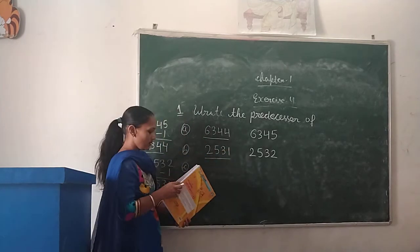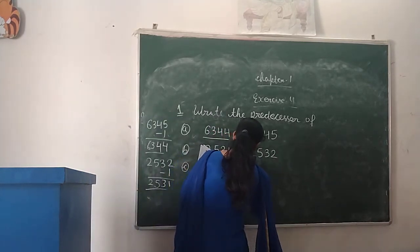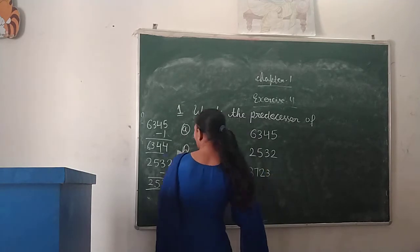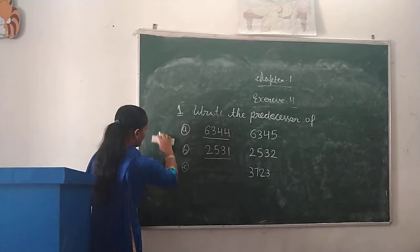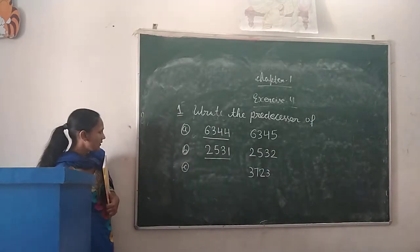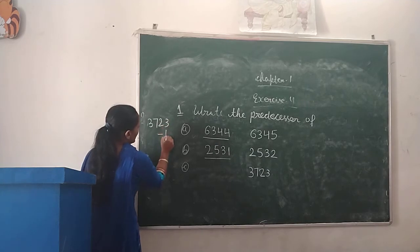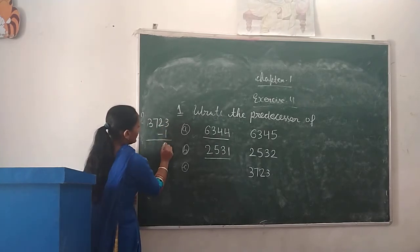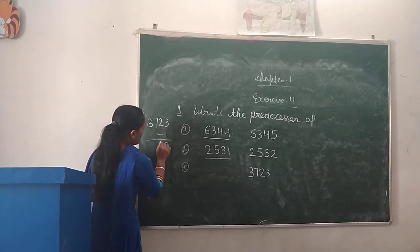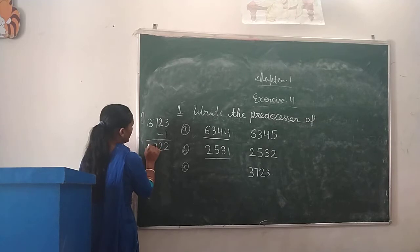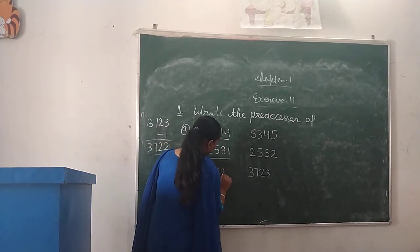Next, Part C: 3,723. We will subtract 1. 3 minus 1 is 2. 3 minus 0 is 3. 7 minus 0 is 7. 3 minus 0 is 3. So the predecessor is 3,722.